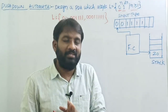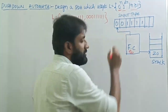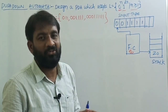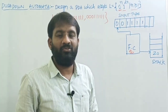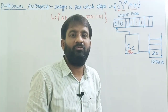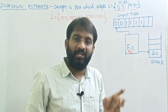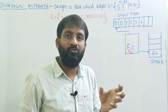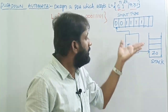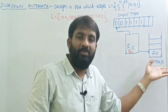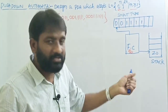The logic behind this design: the initial state is q0. First, read all zeros and push them onto the stack. Then read the ones — for every two ones, pop a single zero from the stack. When the input tape is empty and the stack is also empty, we can move to the final state.